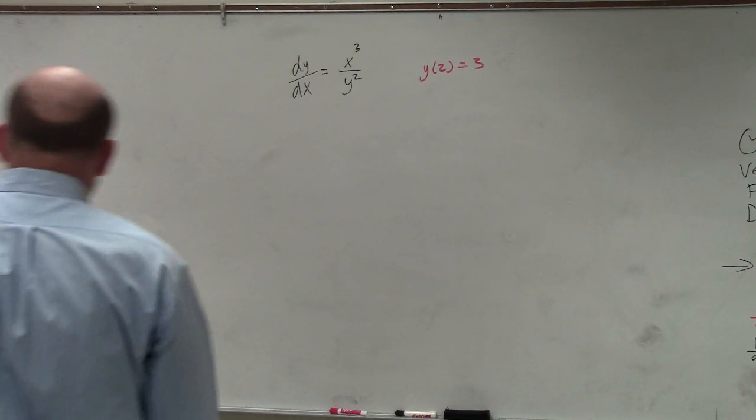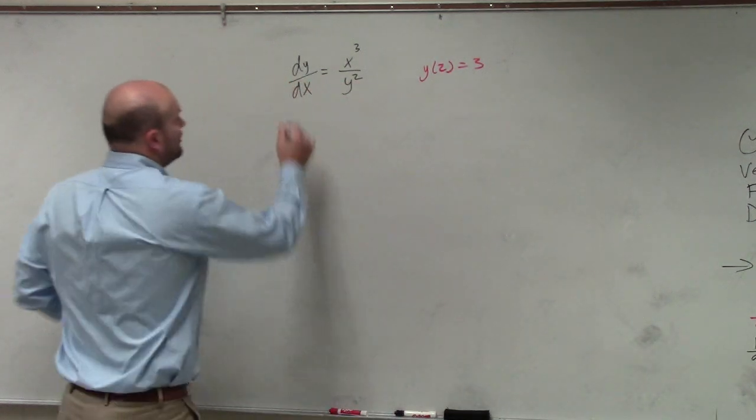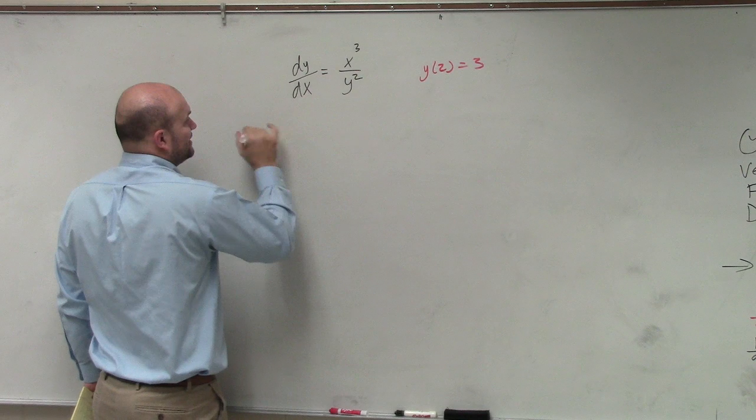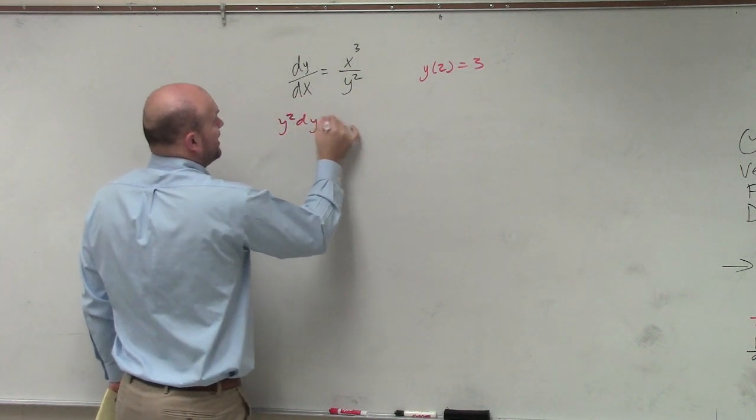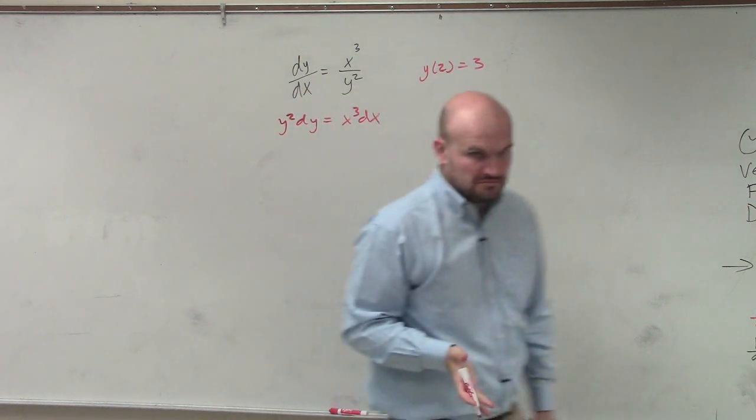OK. So let's go ahead and separate the variables. Multiply by y squared on both sides, multiply by dx on both sides. You would get something like y squared dy equals x cubed dx.